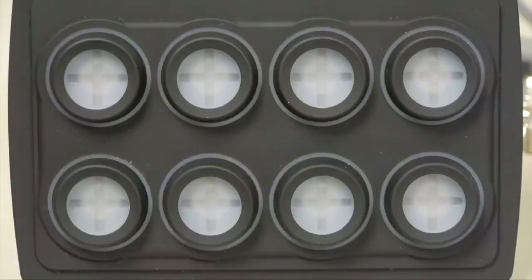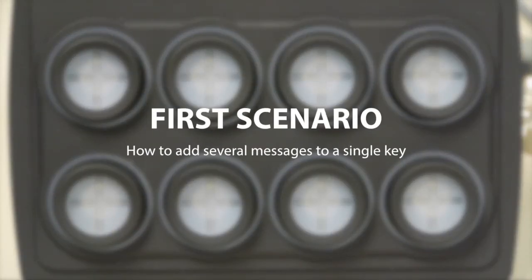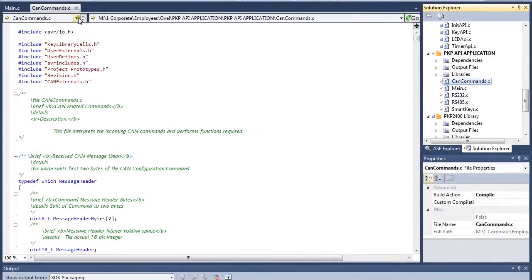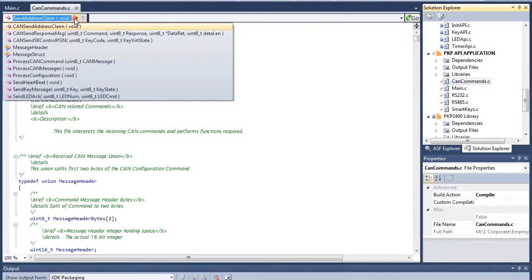In this first scenario, we will see how to add several messages to a single key to be able to perhaps turn on several devices already configured in a system. First, find the send message code in the API software.